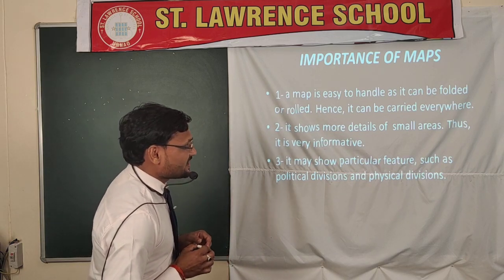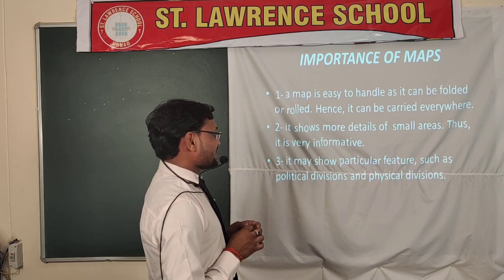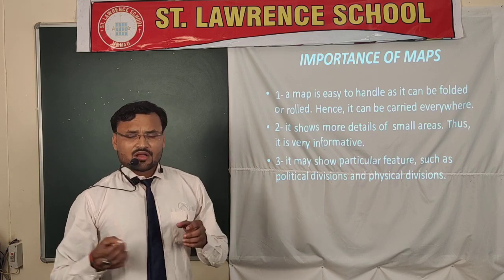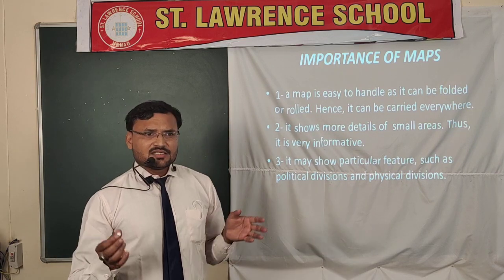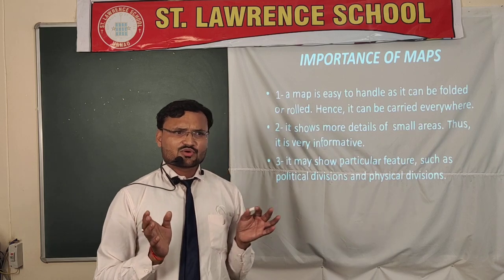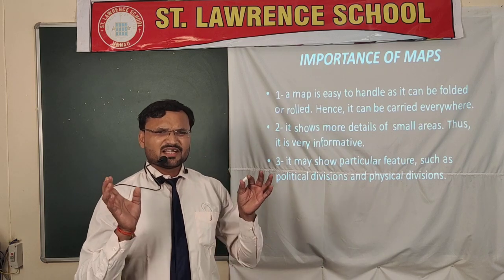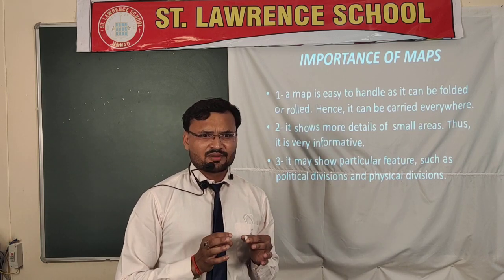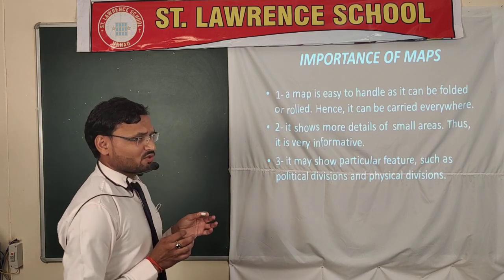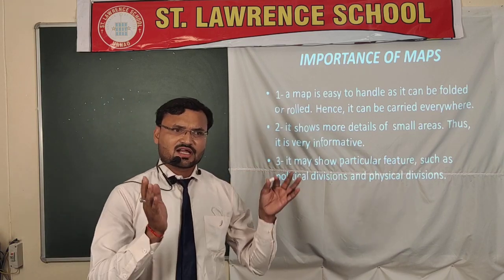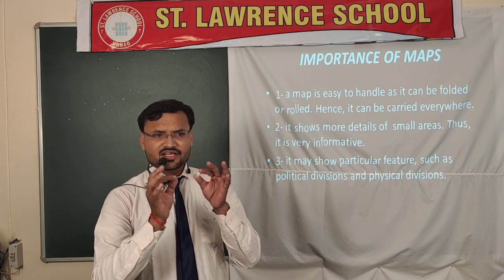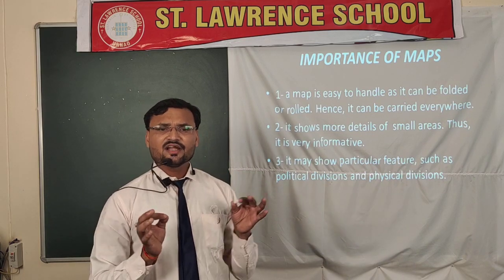Second, a map shows the detail of a small area, making it very informative. On the globe, we can see all the continents and oceans together, but it is very difficult and complicated to study them. In a map, we can take any separate portion of a country, state, or continent and study it in detail.